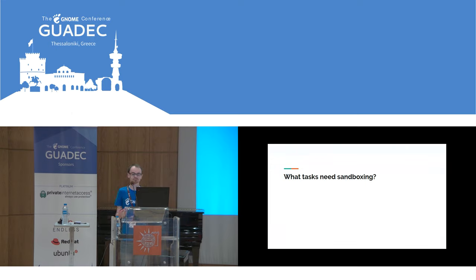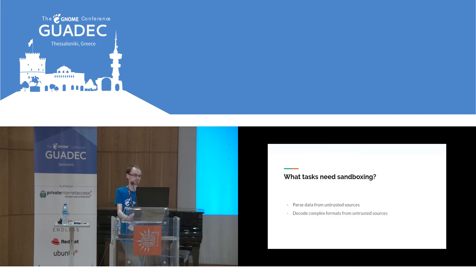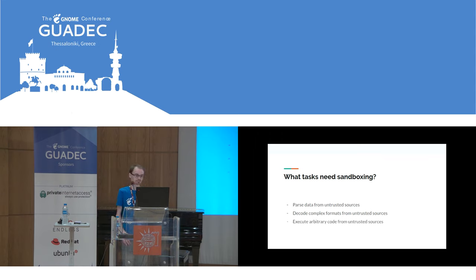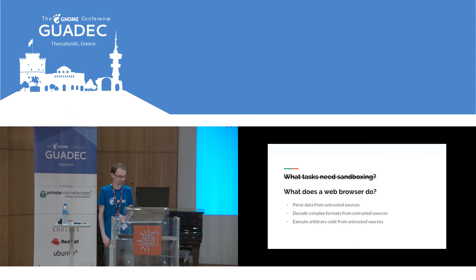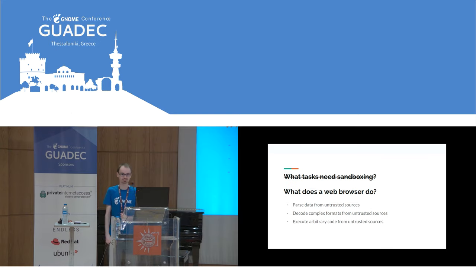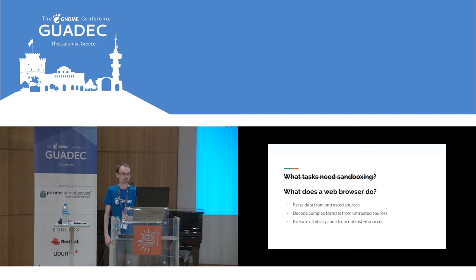As a recap, what tasks are dangerous and need sandboxing? Anything that parses data from untrusted sources — like LibXML or LibRSVG — are common exploits. Decoding complex formats like video files, audio files, and image files. And executing arbitrary code, like game emulators. Those are all things that a web browser does. A web browser is probably the most important target on your desktop when it comes to security — it does tons of very dangerous things and connects to many untrusted sources.